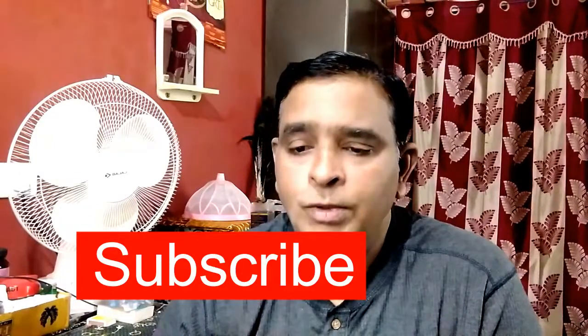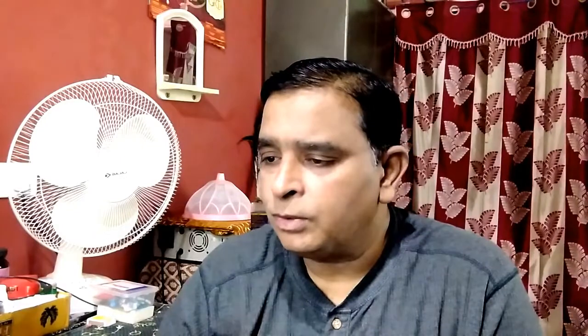How much money does 50,000 Instagram followers make? Influencers with 50,000 to 80,000 followers get around $200 per post, but the price point changes based on the advertiser. Some accounts make deals with brands to post promotional quotes on their feed, and every time a new person uses their quote, they make a percentage of the sale.